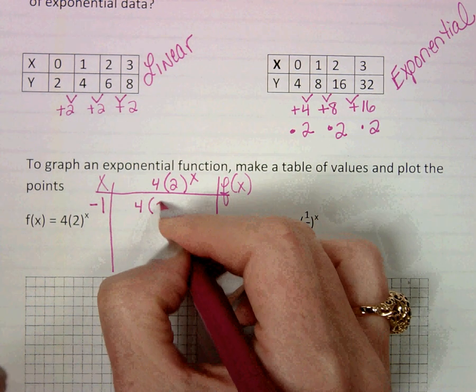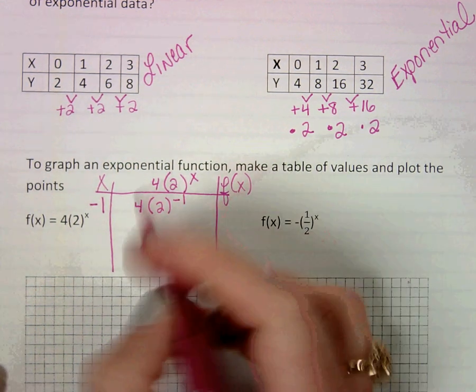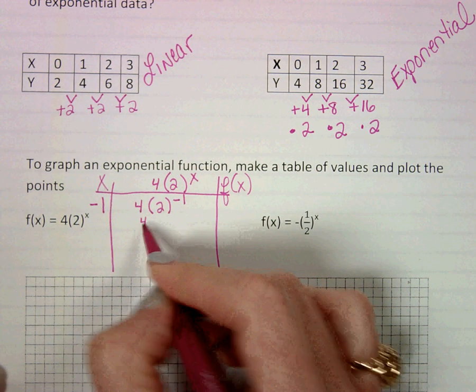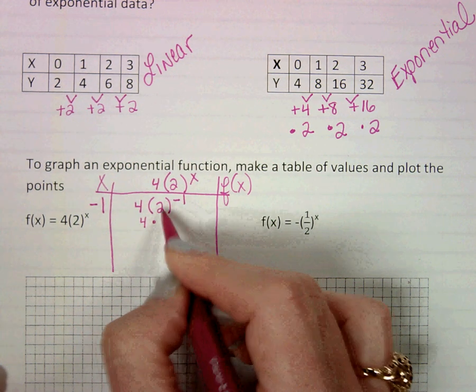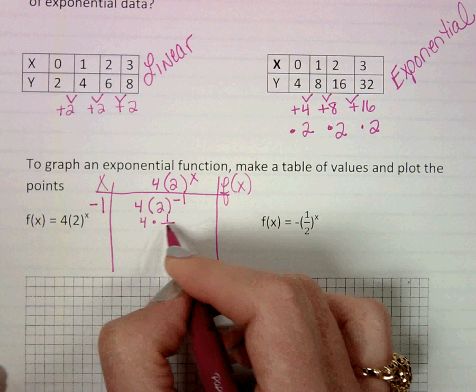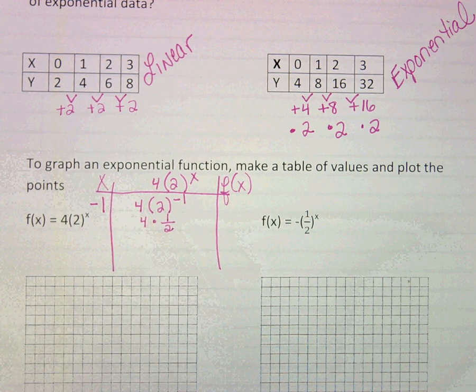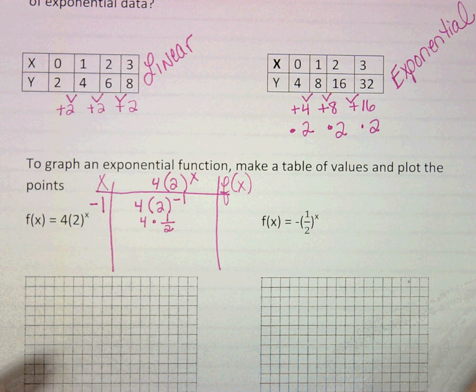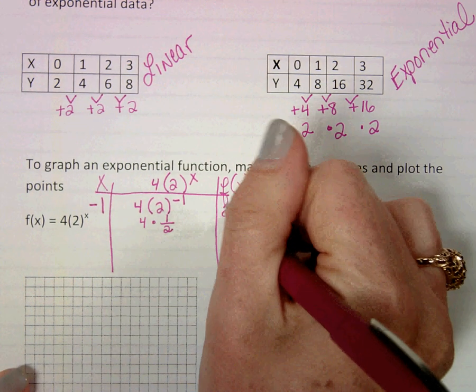So four times two to the negative one. Remember, you need to do exponents first. Remember, when we're dealing with negative exponents, we have to make it positive by moving things to the opposite place. And so this would be four times a half, which is two.